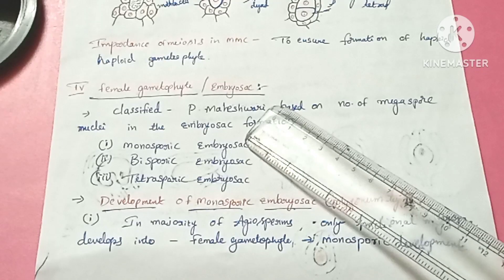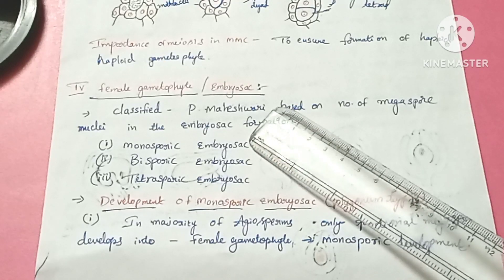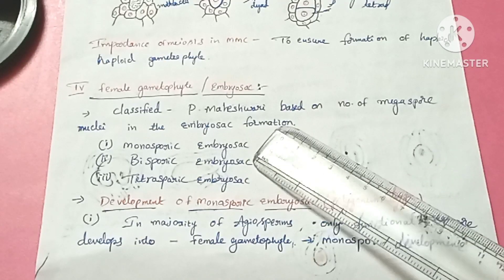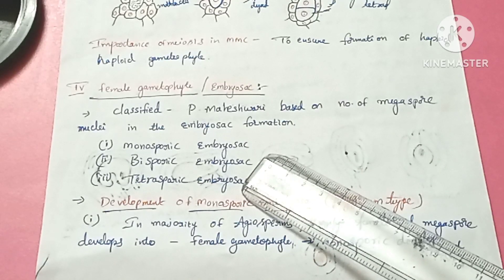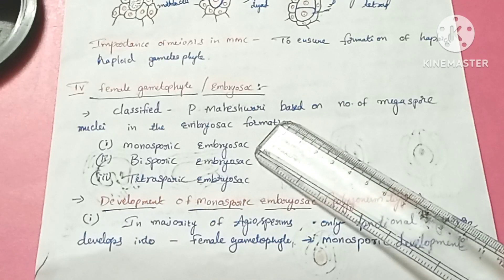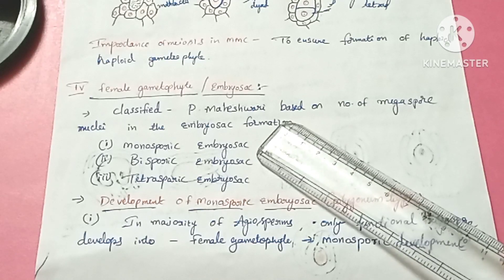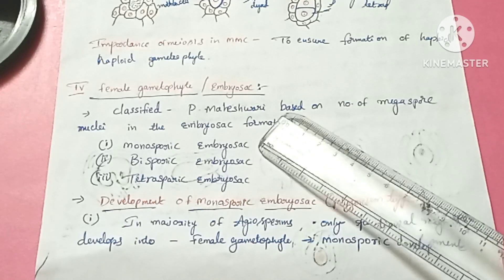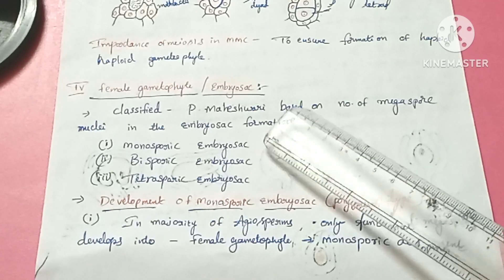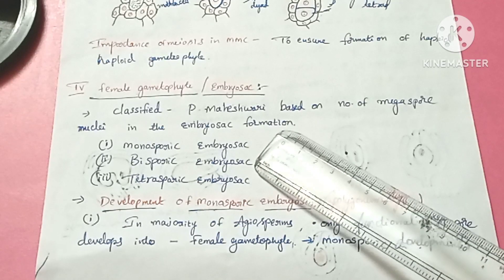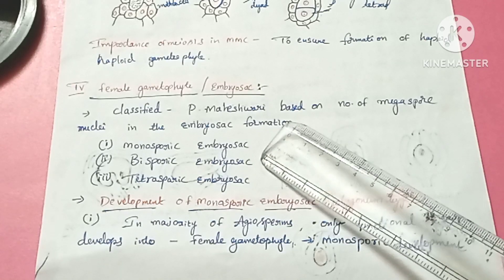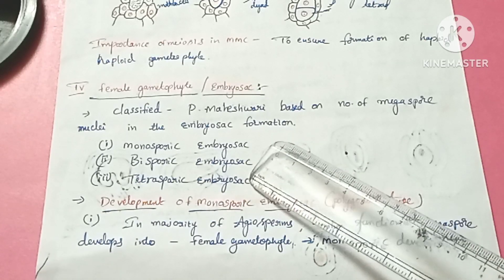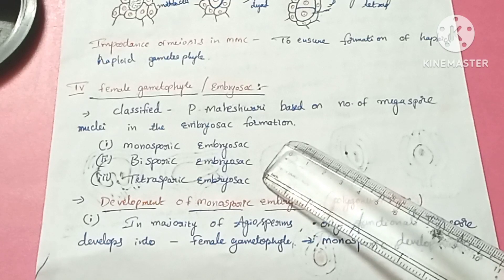Maheshwari identified three types: monosporic embryo sac (single megaspore), bisporic embryo sac (two megaspores), and tetrasporic embryo sac (four megaspores).